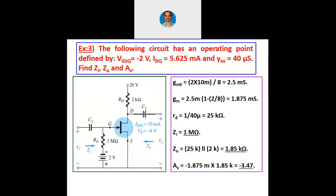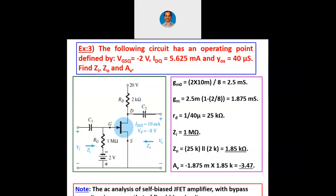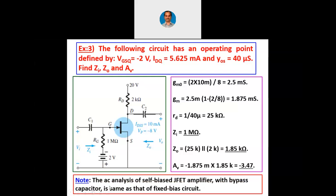The immediate conclusion is that JFET as well as MOSFET circuits can yield very high input impedance, and that is the plus point compared to BJT. The AC analysis of the self-biased JFET amplifier with bypass capacitor is the same as that of the fixed bias circuit, just as with BJT where the bypass capacitor from emitter to ground means the emitter can be considered grounded for AC analysis.